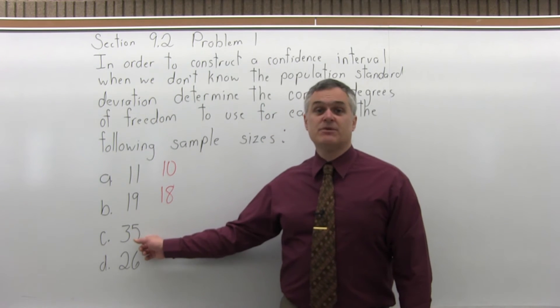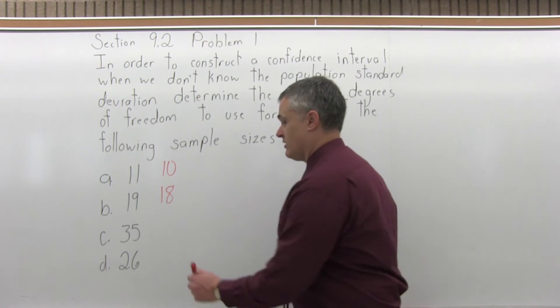Part C, if the sample size is 35, the number of degrees of freedom would be one less. It would be 34.